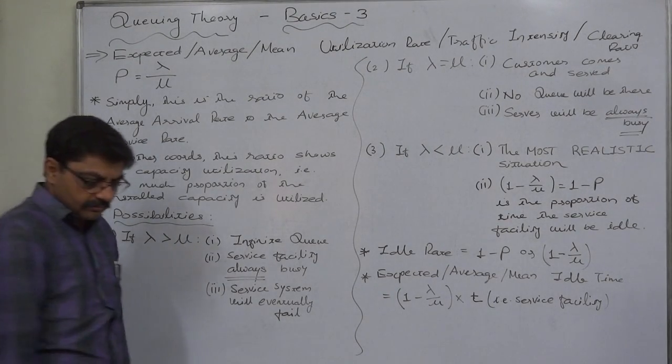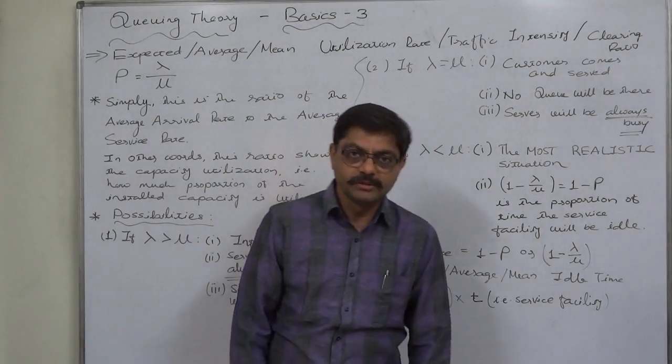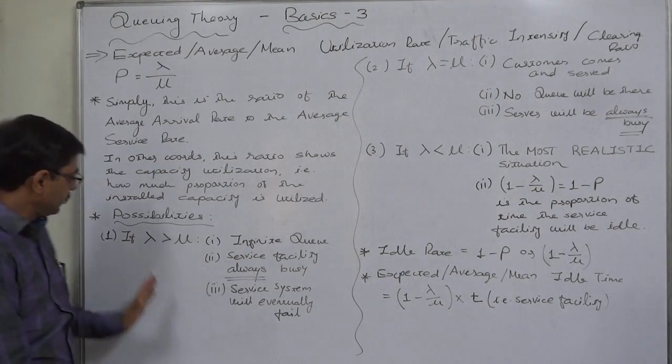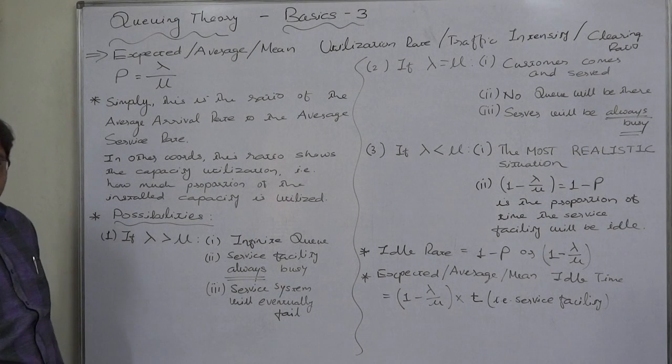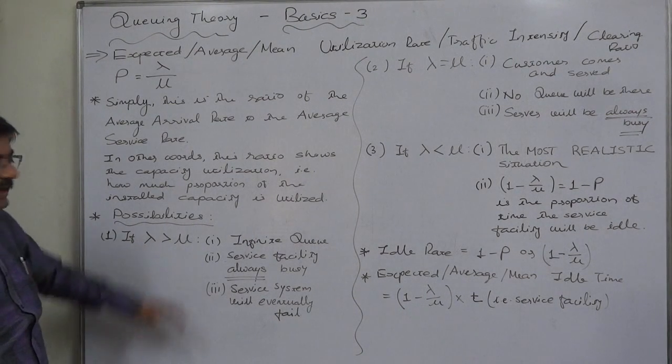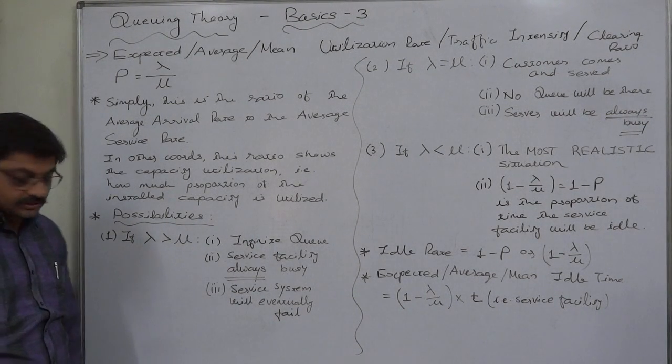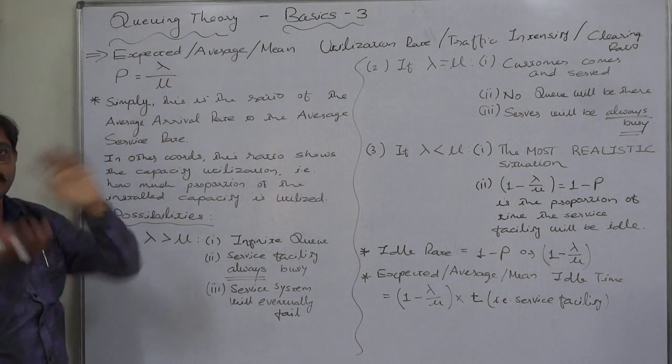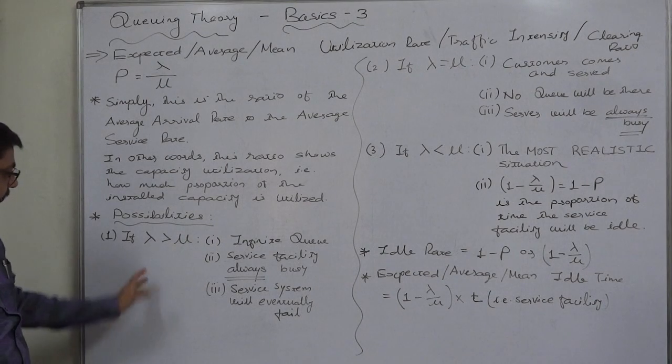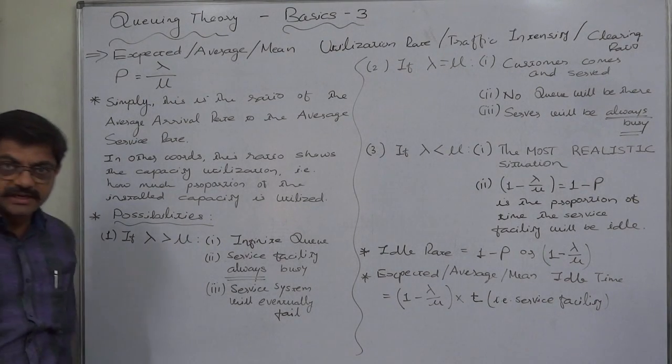Now naturally there are a few possibilities of different values of lambda as well as mu. The first possibility is lambda is greater than mu. What actually happens? In our example lambda was 12 and mu was 15. Now let us interchange them. Lambda the arrival rate is 15 and service rate is 12.